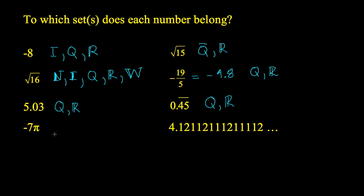Negative 7 pi looks a little bit tricky because the negative 7 is suggesting integers. But if you multiply that by pi, you get a number that is irrational because pi itself is irrational. So that, for sure, is Q bar and R.